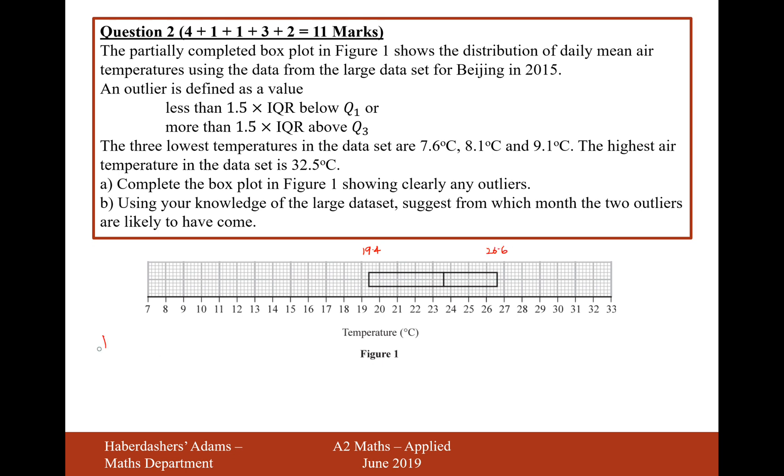So the interquartile range is 26.6 minus 19.4. And if we do that on the calculator, we get 7.2.